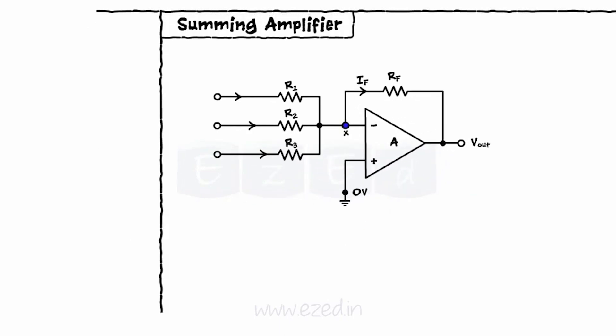We have three inputs as V1, V2 and V3 given to an inverting terminal of an op amp, with the currents as I1, I2 and I3.